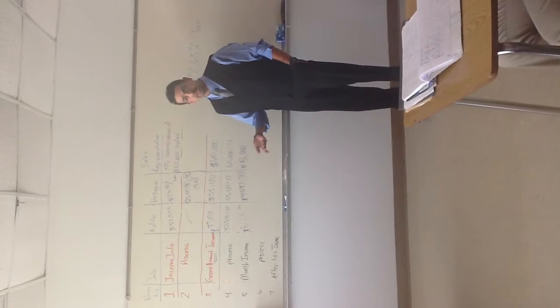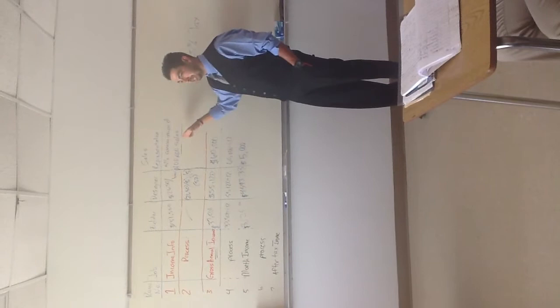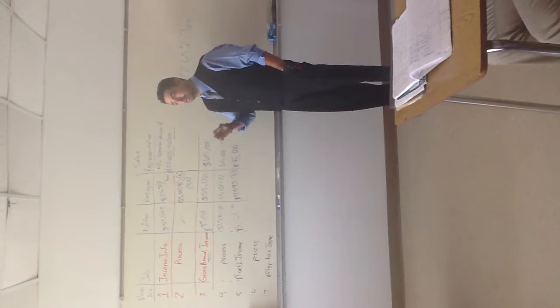Alright, so to get his gross annual income, what we did is we took 5% of $100,000 times 12 months and that gave me $60,000. So that is his annual gross annual salary. Alright, now, are there any questions? Si.